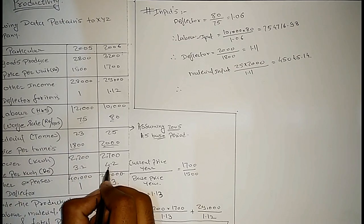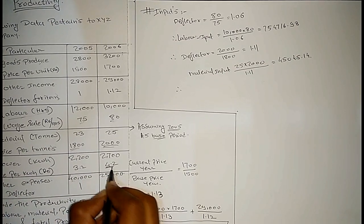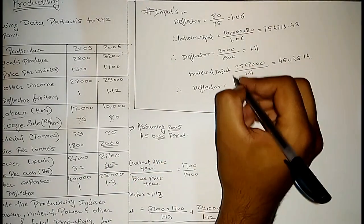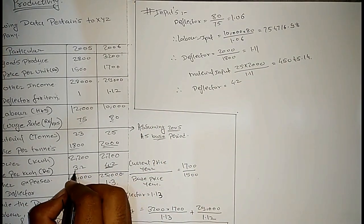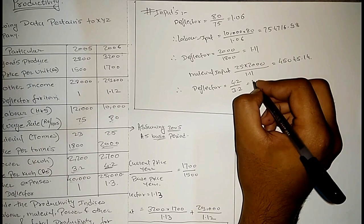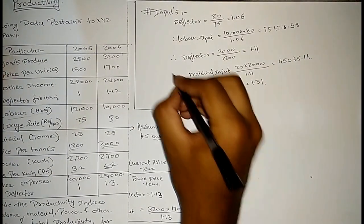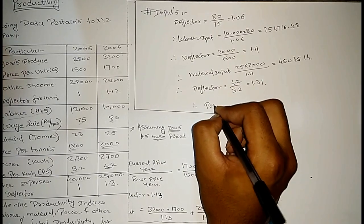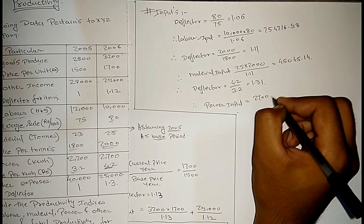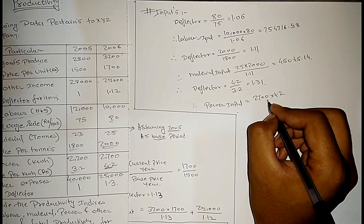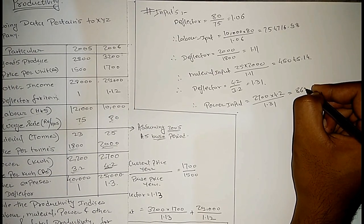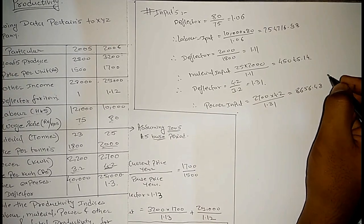Now calculate the input for power. The deflector for power equals the current year rate divided by the previous year rate: 4.2 divided by 3.2, which equals 1.31. Therefore, power input equals 2700 × 4.2 divided by 1.31, giving a power input of 8,656.48.